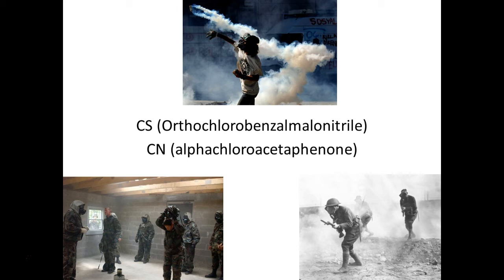There are actually two different types of tear gas. There's CS — the scientific name is orthochlorobenzylmalononitrile — and CN, which is alpha-chloroacetophenone. These are the two different chemicals that represent the two different types of tear gas.